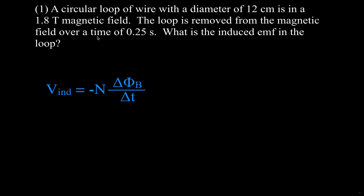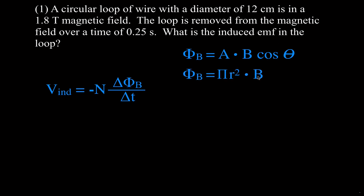N is the number of windings — it doesn't say anything about windings, so we'll assume that's 1. We know the time, but we have to calculate the change in magnetic flux. The flux equals area times magnetic field strength times cosine of theta, where theta is the angle between the line perpendicular to the face of the coil and the magnetic field. Since no angle is specified, we assume the coil is perpendicular, so the angle is zero and cosine of zero is one, reducing flux to area times magnetic field.